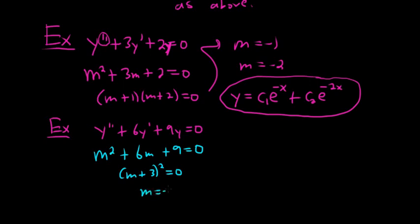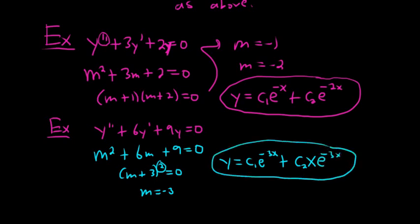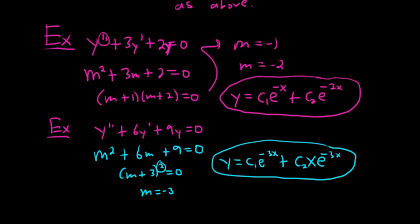So m is negative 3, and the multiplicity is 2. So the answer would be c1 e to the negative 3x, plus, and it's repeated twice, so you have to put an x there. If it was repeated three times, you'd have to have an x squared. c2 x e to the negative 3x. That's the case of the repeated real root.